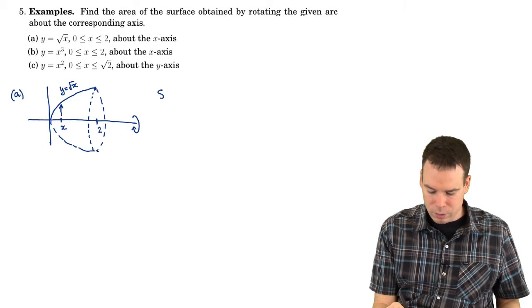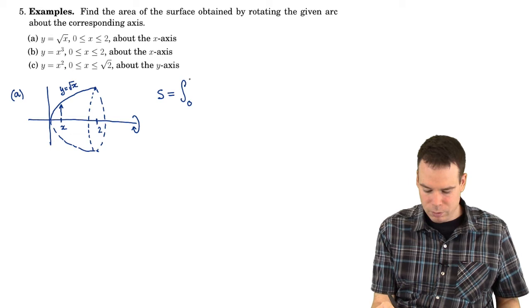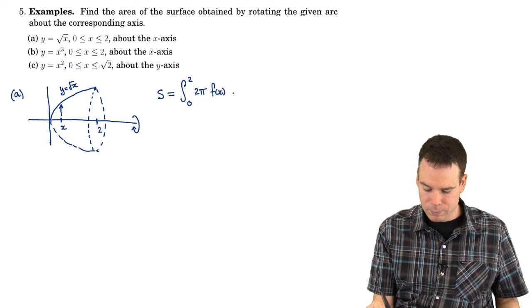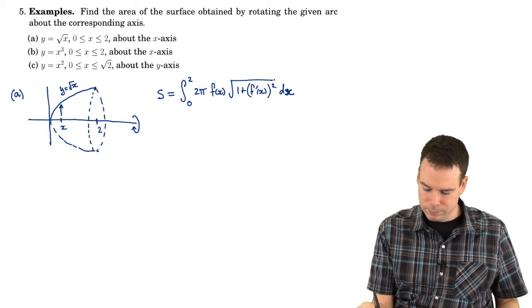What is our surface area? The surface area is the integral from 0 to 2 of 2π times the radius — that's the function value in this case — times the arc length differential. That's the square root of 1 plus the derivative squared, dx.